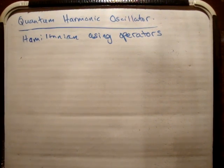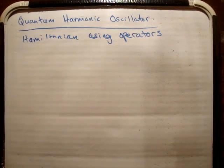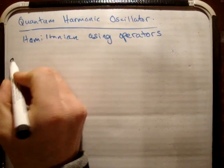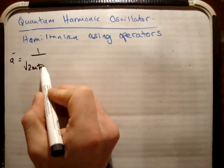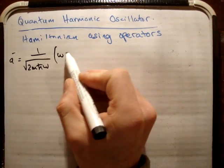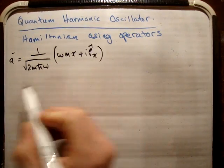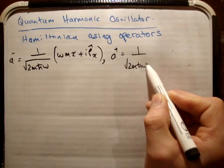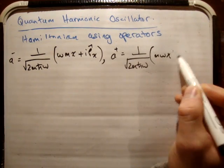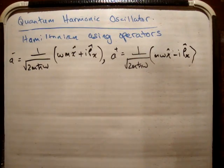Now I'm going to go back to writing our operators in terms of position and momentum — you'll need to have looked at that video before this one. I showed that A minus equals 1 over the square root of 2m h-bar omega, times (m omega x + i p_x), where p_x is the momentum operator. And A plus equals 1 over the square root of 2m h-bar omega, times (m omega x − i p_x).